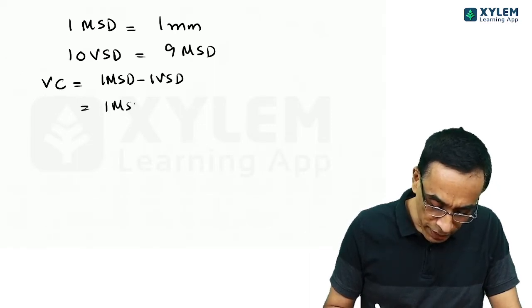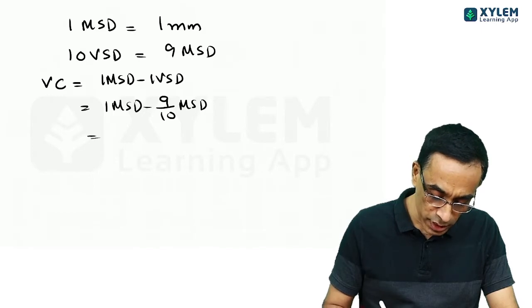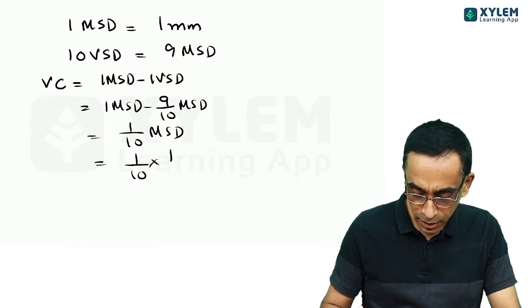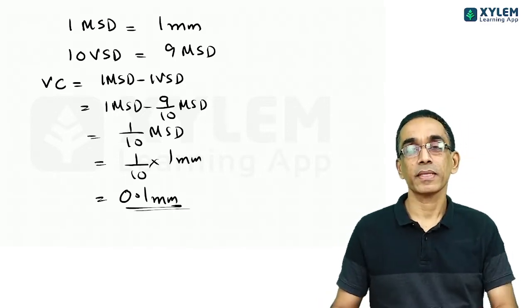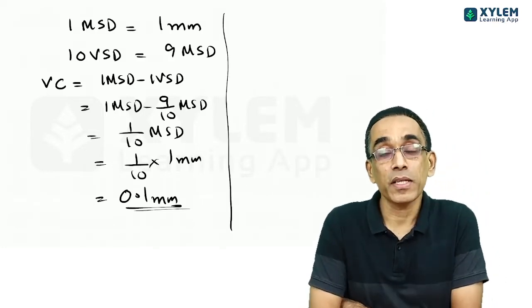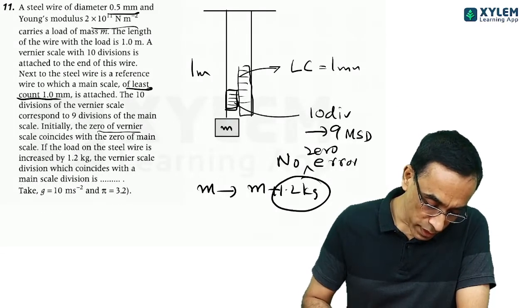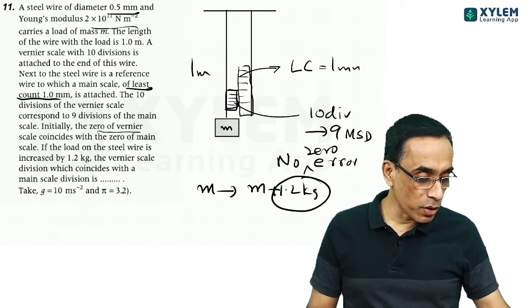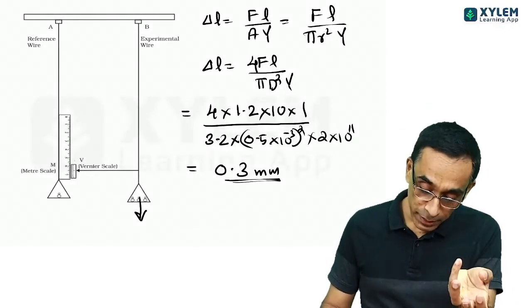Clear. Now, if you want to find out vernier constant, which is the least count of the whole device, this gives you 1 by 10 main scale division, which is 1 by 10 of a millimeter, which is 0.1 millimeter. Clear, all right?